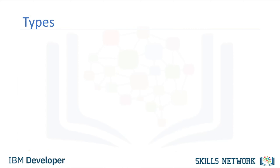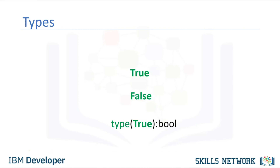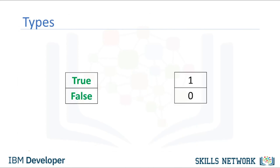Boolean is another important type in Python. A Boolean can take on two values. The first value is true — just remember we use an uppercase T. Boolean values can also be false, with an uppercase F. Using the type command on a Boolean value, we obtain the term bool, which is short for Boolean. If we cast a Boolean true to an integer or float, we will get a 1. If we cast a Boolean false to an integer or float, we get a 0.